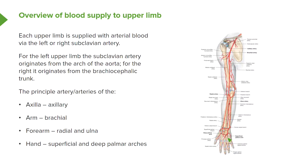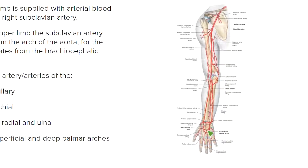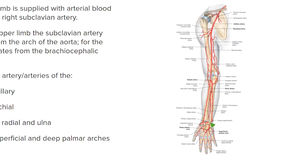When we pass into the hand, we can see we have these deep and superficial palmar arches. So all of these blood vessels are originating from the subclavian artery. It passes down into the axillary artery, which then becomes the brachial artery. The brachial artery then bifurcates into radial and ulnar arteries, and here we have those superficial and deep palmar arches. So we're going to look at the details of all of these blood vessels.